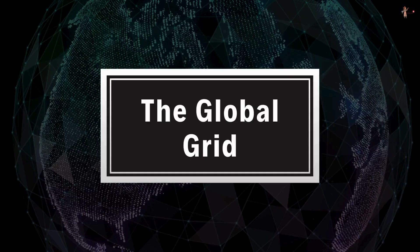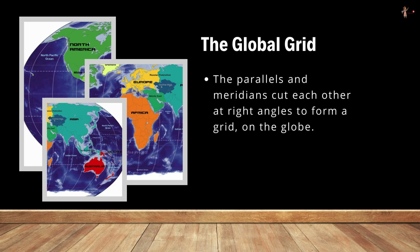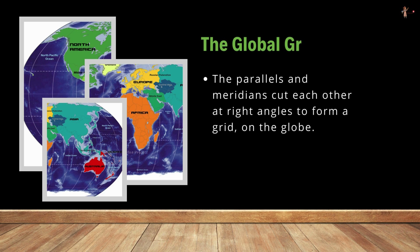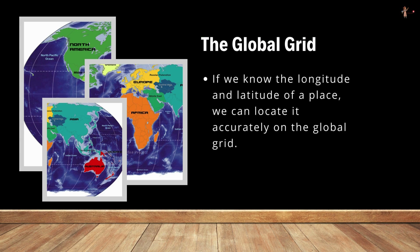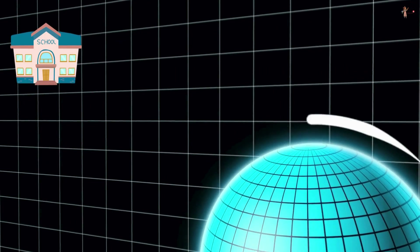Next is the global grid. The parallels and meridians cut each other at right angles to form a grid on the globe — this is known as the global grid. If we know the longitude and latitude of a place, we can locate it accurately on the global grid. For example, the location of New Orleans is 30 degrees north latitude and 90 degrees west longitude. Find out the location of your school on the global grid and comment below.